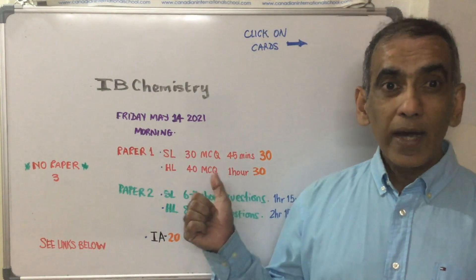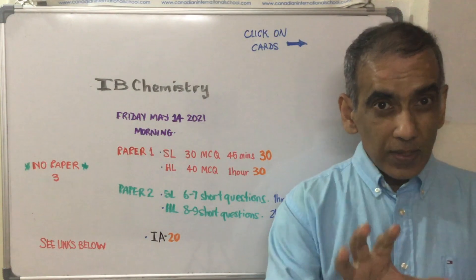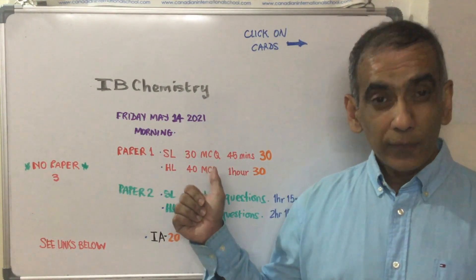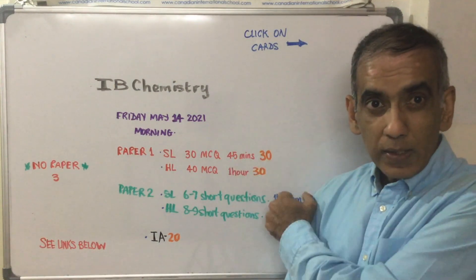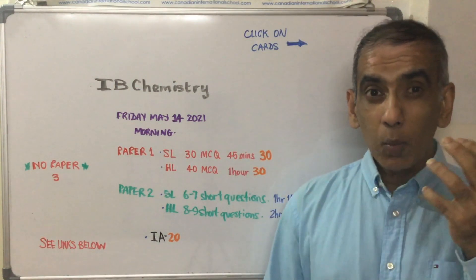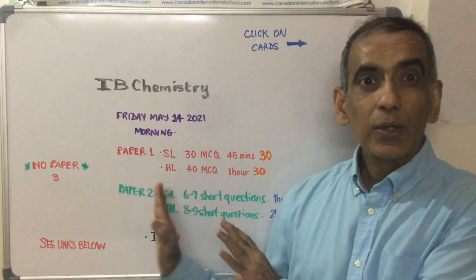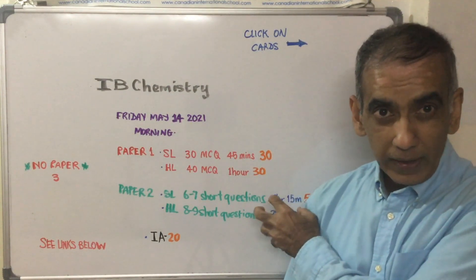HL students, you have 40 multiple choice questions, one hour. SL students, you have 30 multiple choice questions, 45 minutes. Each of these paper ones is going to carry a higher weight than it usually carries because there's no paper 3. That weight is 30 percent of the final grade.